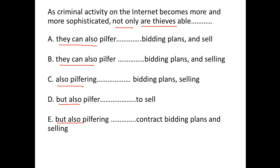The first construction is: Subject + not only [verb] but also [verb]. This is a very common construction, and for both verbs the subject is common.